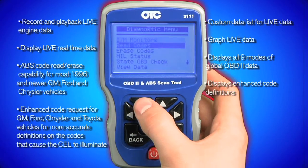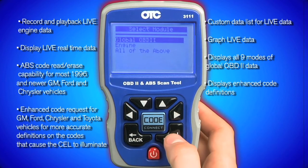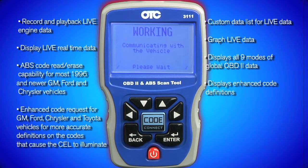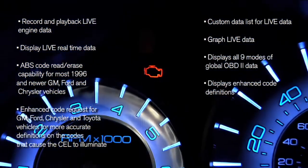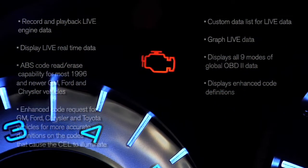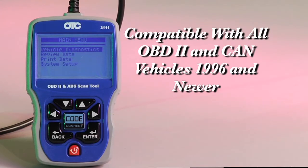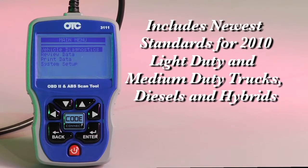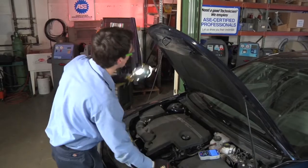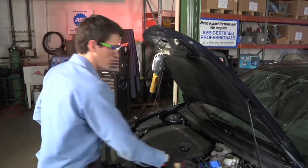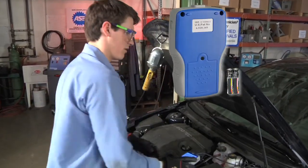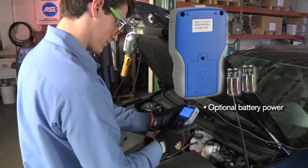Enhanced code request for GM, Ford, Chrysler and Toyota vehicles for more accurate definitions on the codes that cause the check engine light to illuminate. Compatible with all OBD2 and CAN vehicles 1996 and newer, including the newest standards for 2010 HD, diesel and hybrid vehicles. This tool stands up to the repair environment. Also optional battery power.